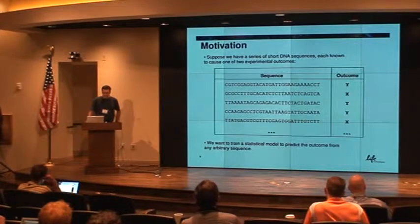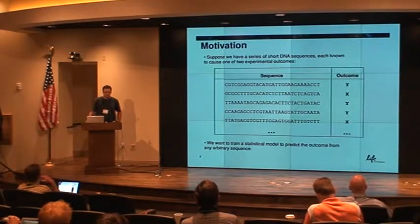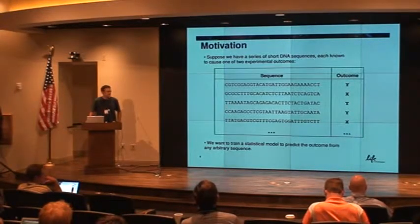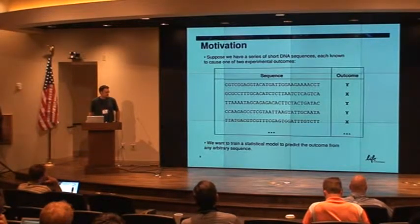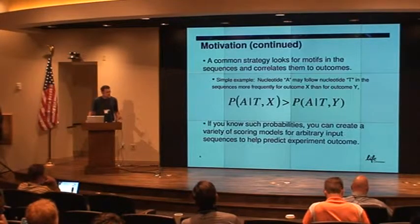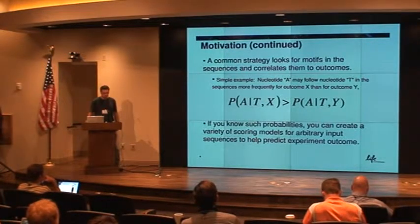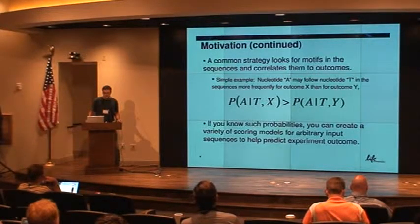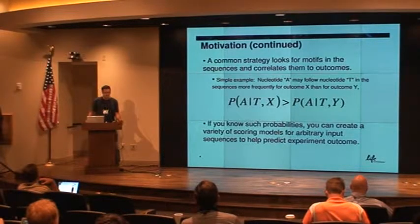Suppose we have a bunch of short DNA sequences, and each of them have been experimentally correlated to an outcome in the lab. Say now that we want to be able to train a statistical model to recognize outcome for any arbitrary given sequence. A common strategy for this is to look for motifs in the sequence and correlate them to outcomes. For example, we might notice for the sequences that produce outcome X, that it's more likely for an A to follow a T than in the sequences that produced outcome Y.